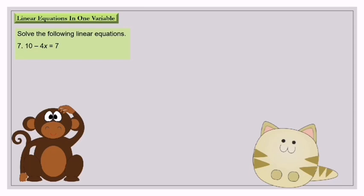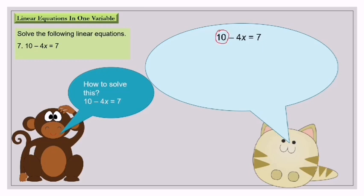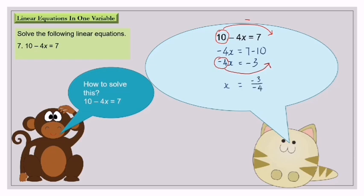Question number 7: 10 minus 4s equals 7. The value of 10 here is positive. When you move it to the right hand side, it will become minus. So negative 4s equals 7 minus 10. Negative 4s equals negative 3. Move negative 4 to the right hand side. s equals negative 3 over negative 4. s equals 3 over 4.